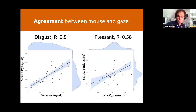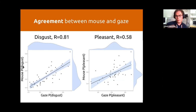We also did a within-participant design. Essentially within participants, you see that the proportion of time they spend gazing at disgusting stimuli really strongly correlates with the proportion of time they spend using MouseView on the same disgusting stimuli and pleasant stimuli. I have never before seen correlations like this in these types of designs.